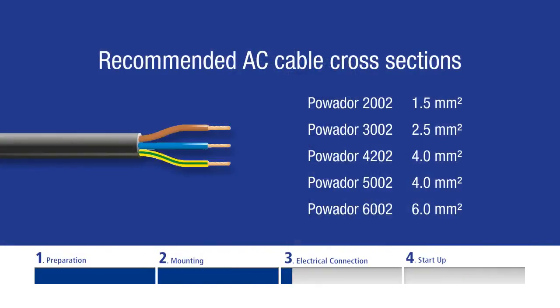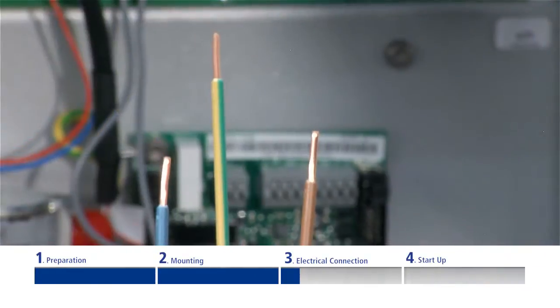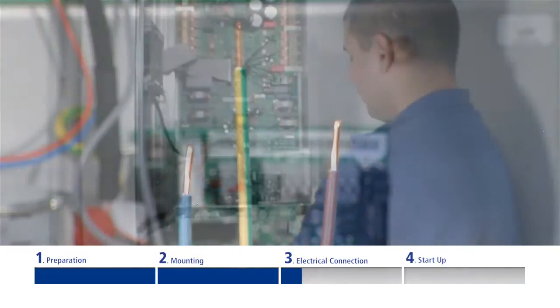Be sure to use cables with a sufficiently large cross section. This prevents excessive line impedance between the mains distribution board and the inverter. Excessive line impedance will lead to the inverter being switched off due to grid over voltage.